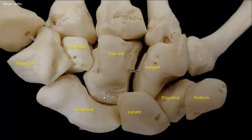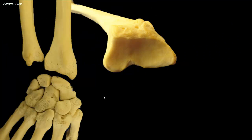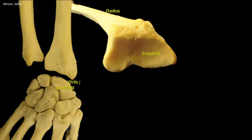The scaphoid means boat, and it is called so since it is boat-shaped. The scaphoid articulates with the distal end of the radius, forming part of the wrist joint. At the distal end of the radius, there is a lateral triangular area for articulation with the scaphoid.